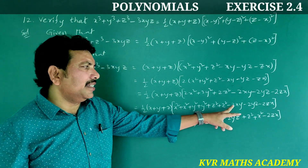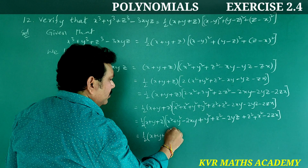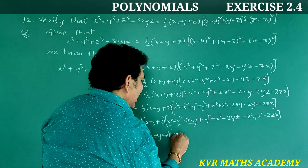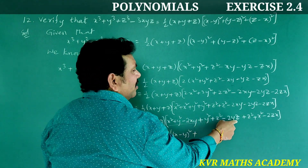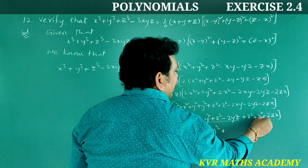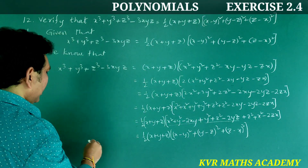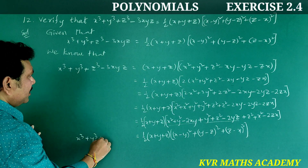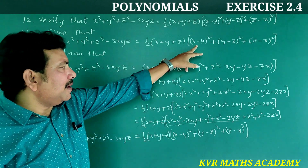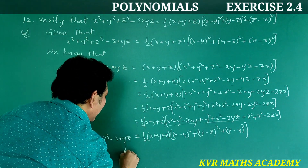Regrouping: 2x² + 2y² − 2xy = (x−y)², 2y² + 2z² − 2yz = (y−z)², and 2z² + 2x² − 2zx = (z−x)². Therefore, x³ + y³ + z³ − 3xyz = ½(x + y + z)[(x−y)² + (y−z)² + (z−x)²]. Hence verified.